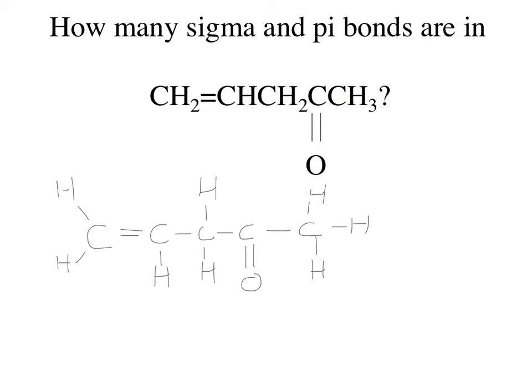So sigma bonds, those are single bonds. And pi bonds are double. Now the thing about the sigma bonds is one of the double bonds counts as a sigma. So let's count the sigma bonds.